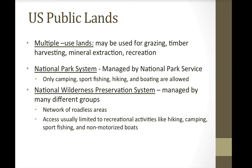The National Wilderness Preservation System is the third main kind of U.S. public land, set aside by several different groups. It forms a network of roadless areas — wilderness, by the U.S. definition, is a roadless area. Access is usually limited to hiking, camping, sport fishing, and non-motorized boating. You park at the edge of the wilderness area and hike in because there are no roads.